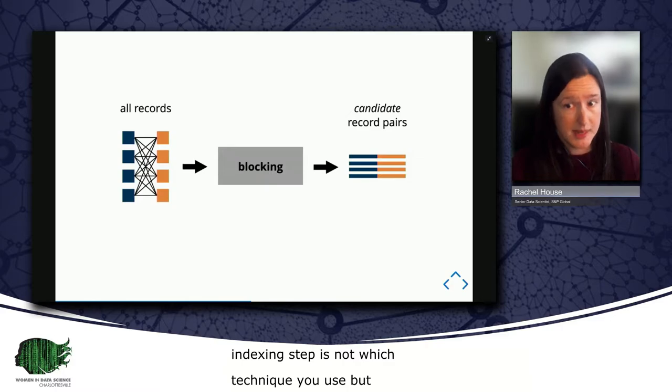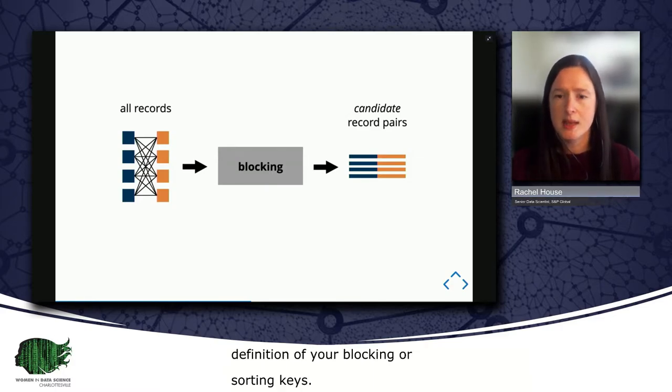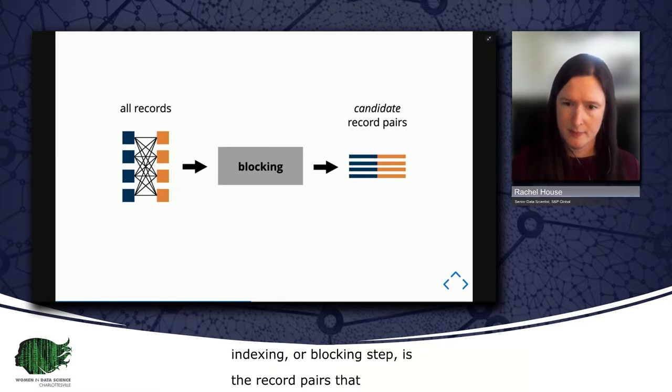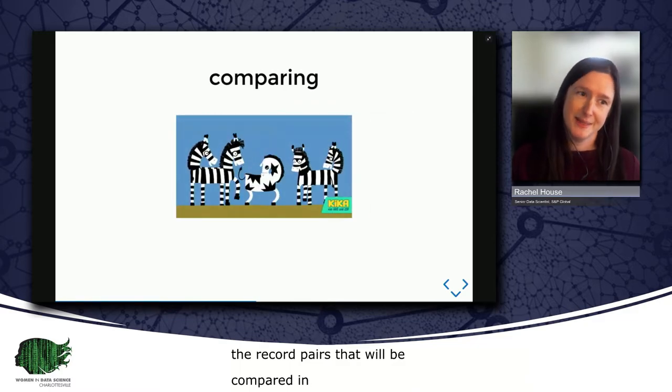In summary, the output of the indexing or most commonly blocking step is the record pairs that will be compared in the next step of the data linking process. And that next step is comparing.